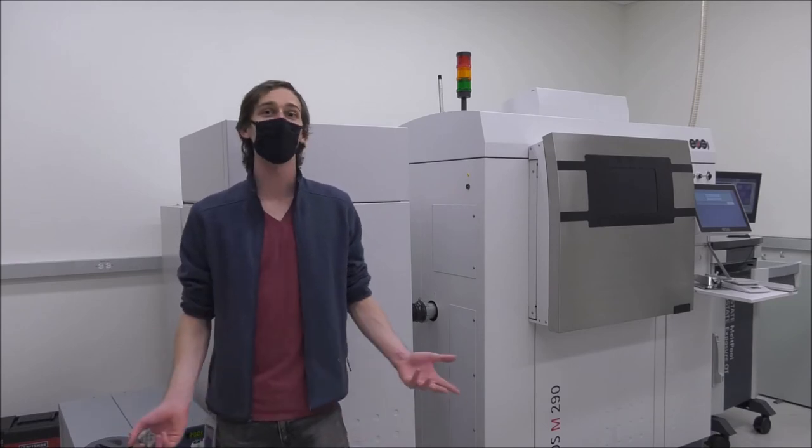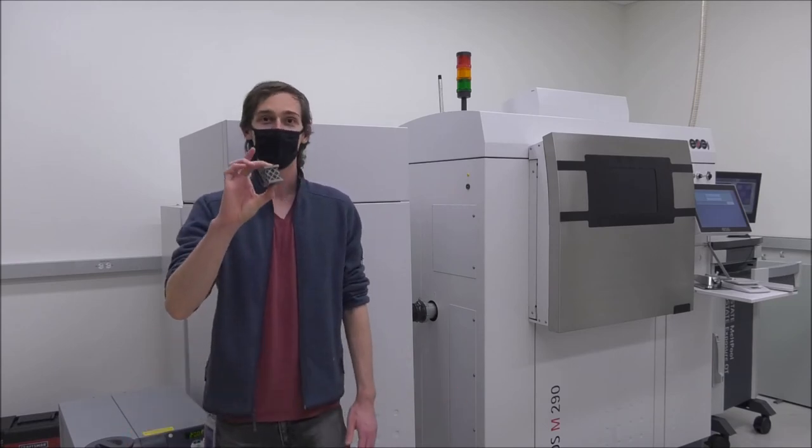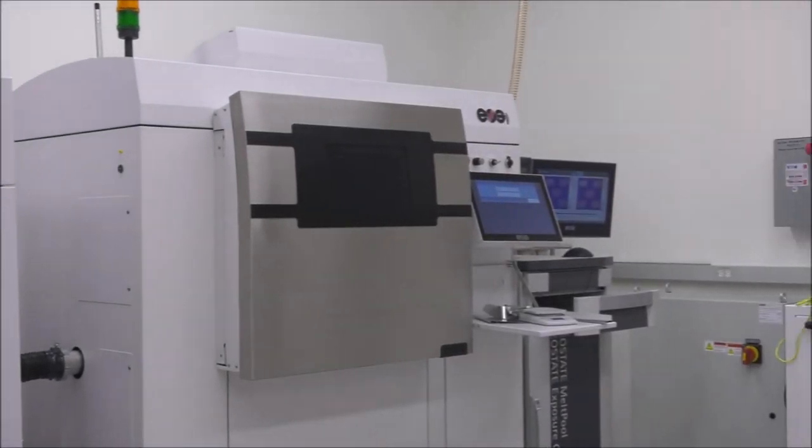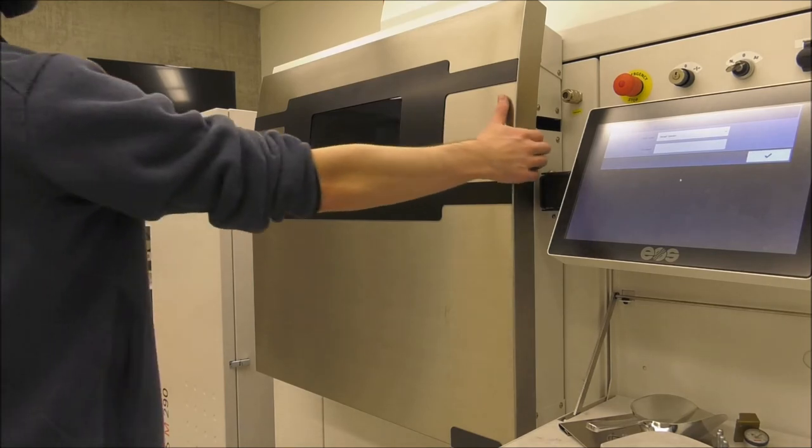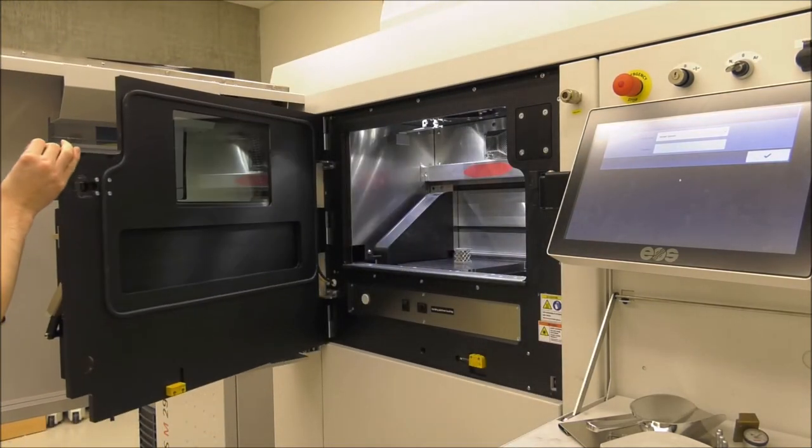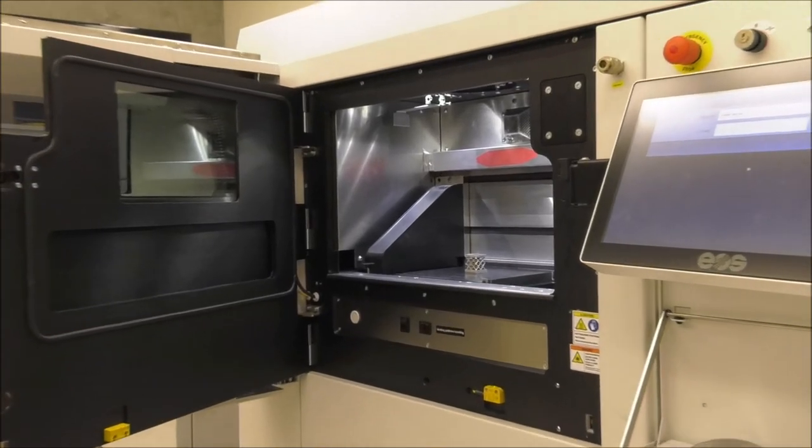Welcome to one of our 3D printing labs. Here we turn titanium powder into fully printed titanium parts. Behind me is an EOS M290. It is a selective laser melting machine, so that just means that it's printing by selectively melting layers of metal powder using a laser.